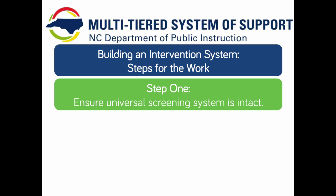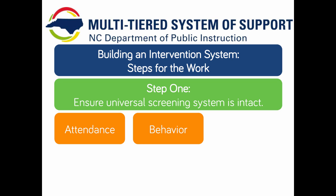A universal screening system will assist you in using information available about individual students in order to make decisions about the overall health of core support, and can assist in systematically identifying areas of need. A universal screening system should include information on student attendance, behavior data, and academic performance.